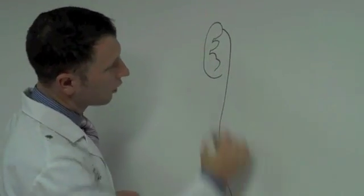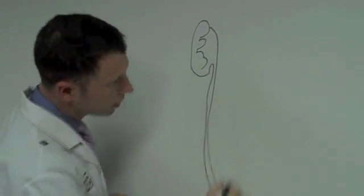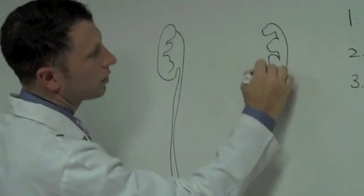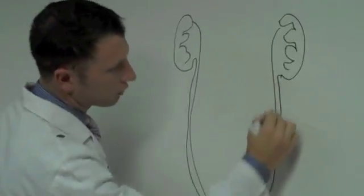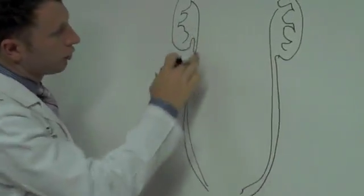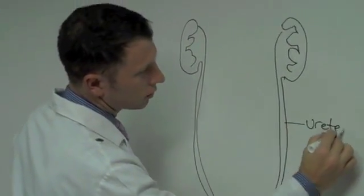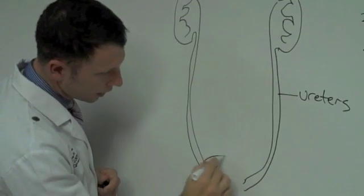The bladder serves as a reservoir for urine that's made in the kidneys, which I'm showing you here. The kidneys make the urine after filtering the blood. Urine travels through these tubes called ureters and is stored here in the bladder.